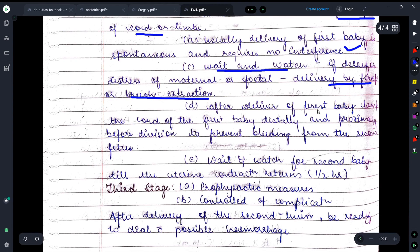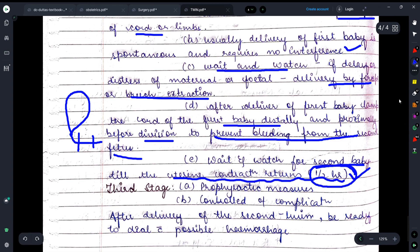Moving on, after delivery of the first baby, clamp the cord of the first baby distally and proximally before division to prevent bleeding from the second fetus. We have to clamp the umbilical cord after the first baby's delivery so that there's not excessive bleeding. Wait and watch for the second baby till uterine contractions return, and we have to wait for the second baby until the uterine contractions start happening again, and this time is around half an hour.